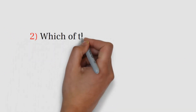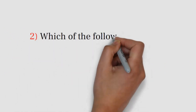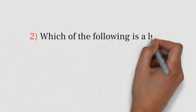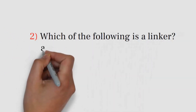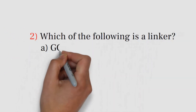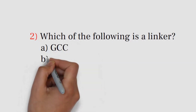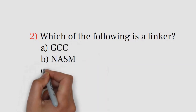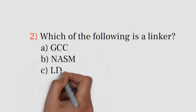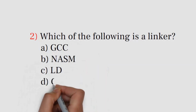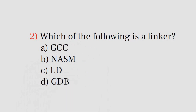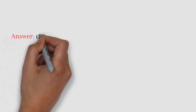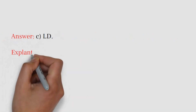Question number 2. Which of the following is a linker? A. GCC. B. NASM. C. LD. D. GDB. Answer: C. LD.